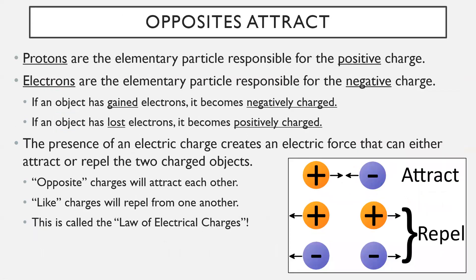Opposites attract — I'm sure you've heard this before, but we're going to break it down a bit more for Science 9. Protons are the elementary particle responsible for the positive charge, and electrons are the elementary particle responsible for the negative charge. If an object has gained electrons, it becomes negatively charged — meaning it has more electrons than protons. If an object has lost electrons, it becomes positively charged.